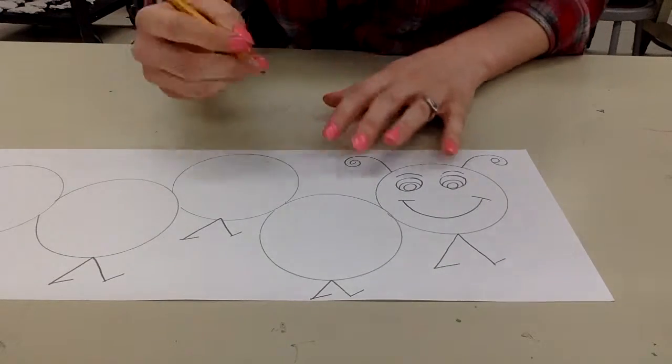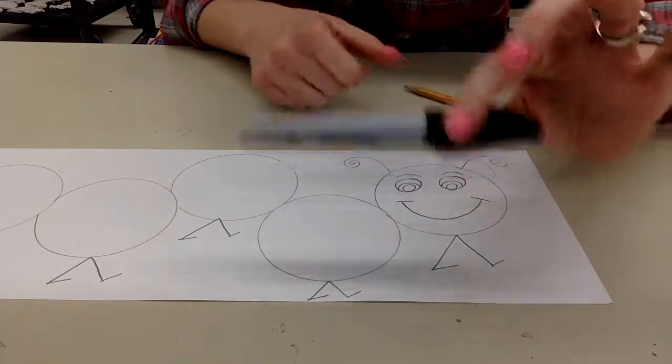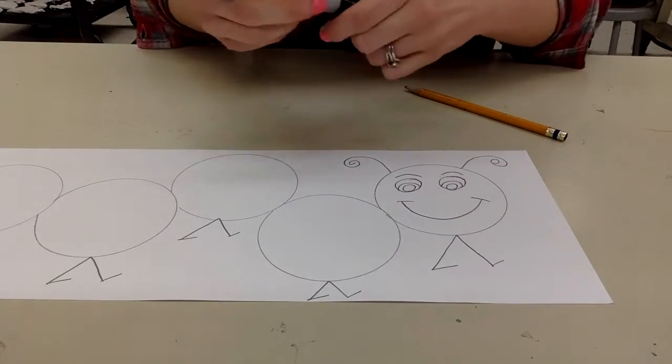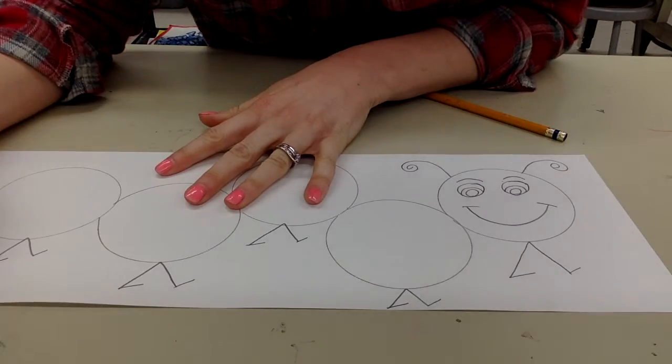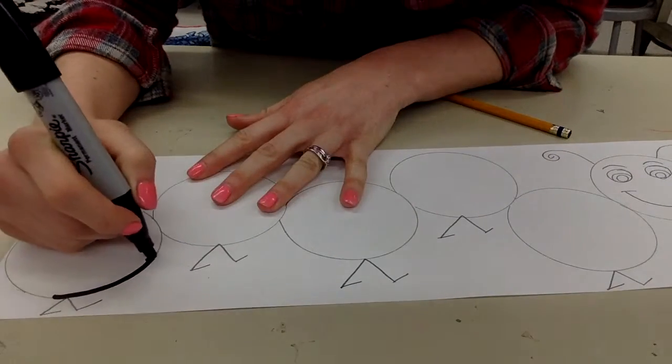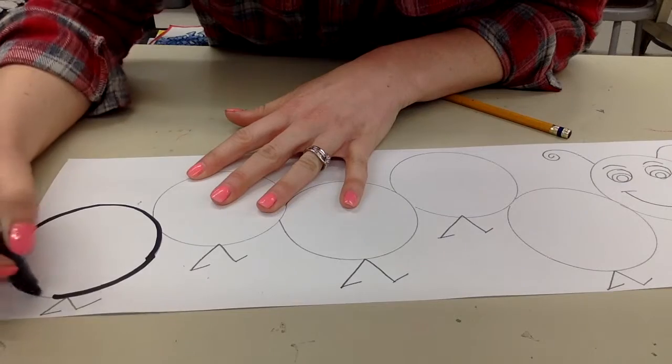And then you're going to go in and you're going to trace with a sharpie. Now when you do this, you want to be really careful and take your time. Try to go right over top of your pencil marks. This is called tracing.